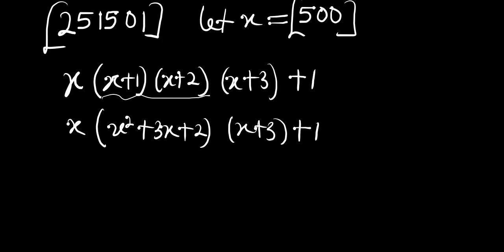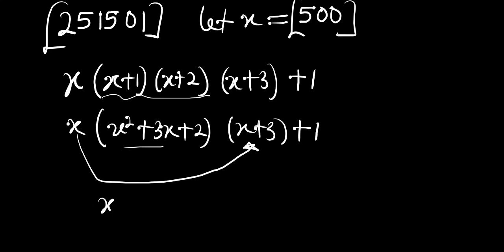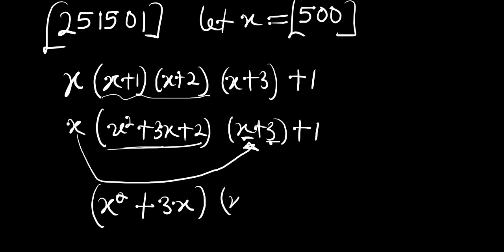The next step is to multiply these two results together. x times x gives x squared, x times 3x gives 3x, and combining everything we get x squared times (x squared plus 3x) plus x squared plus 3x plus 2, plus 1.